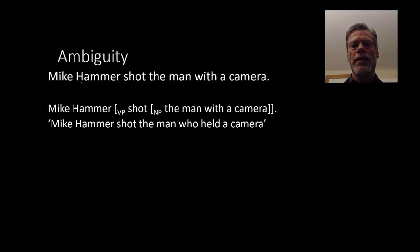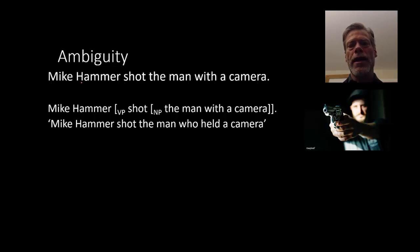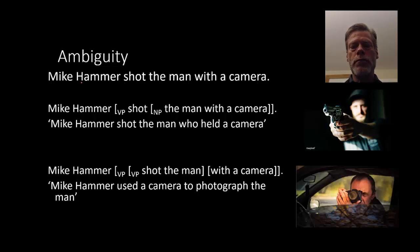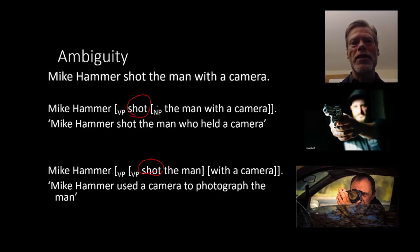Here's another example: 'My camera shot the man with a camera.' This could mean that he shot the man with a gun and the man was holding a camera — in that case, 'with a camera' is modifying 'man.' Or it could mean that my camera had a camera and he used it to take a picture of the man. There's also lexical ambiguity here, where 'shoot' has two different meanings: to shoot with a gun, or to shoot with a camera.